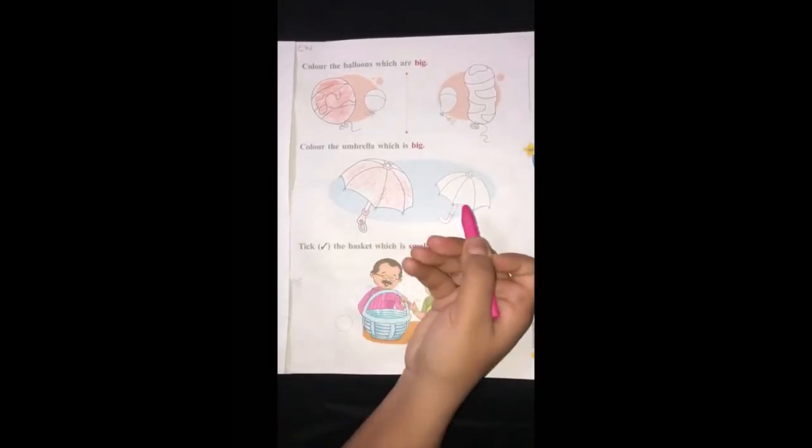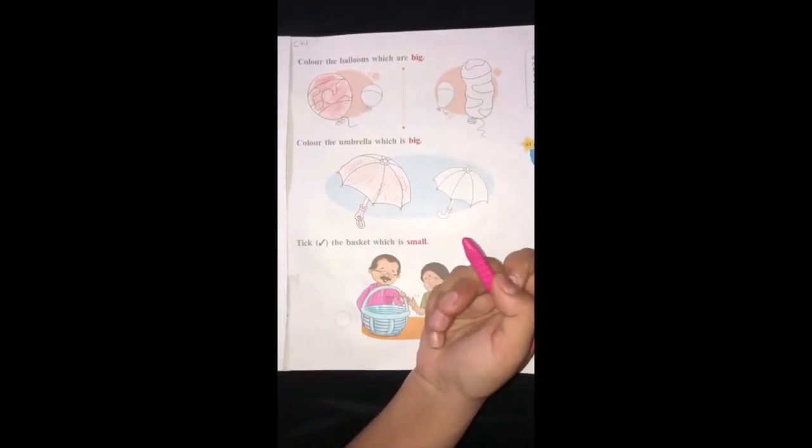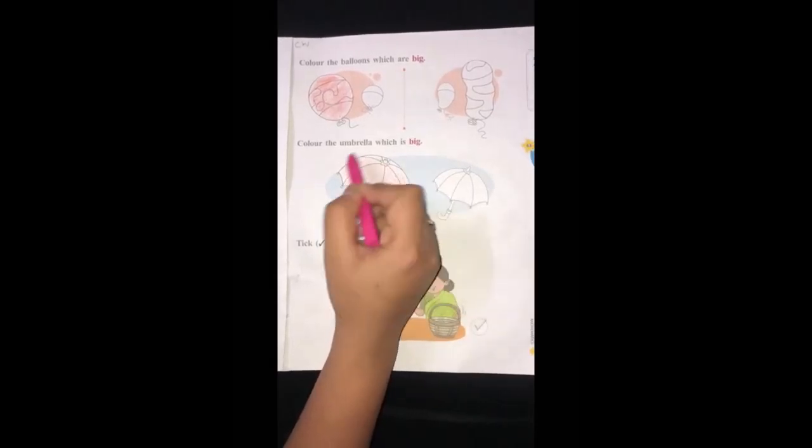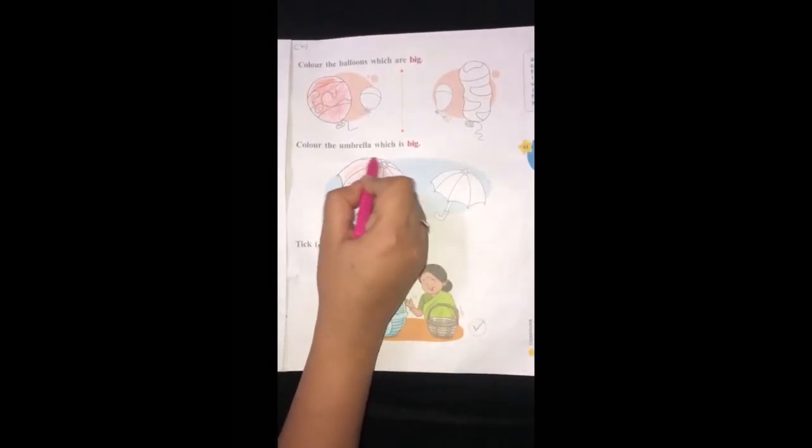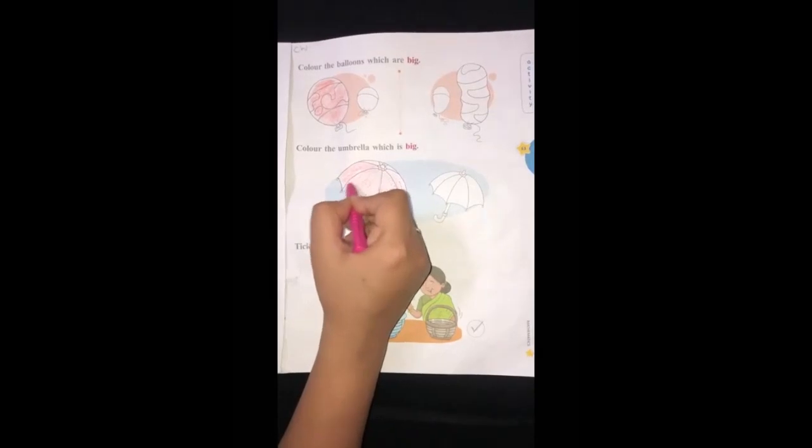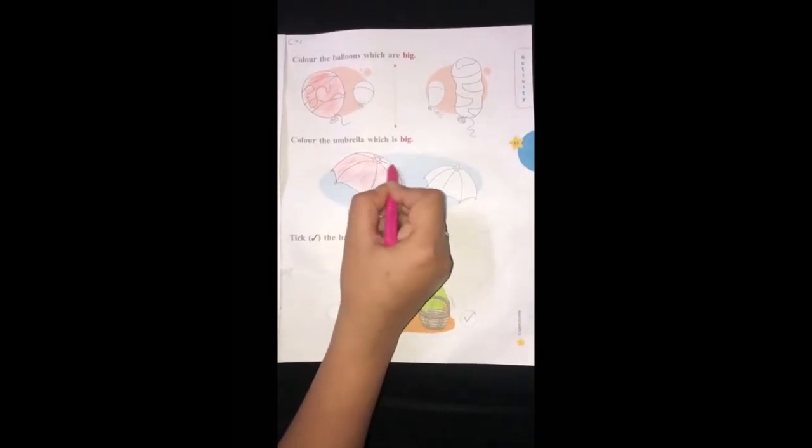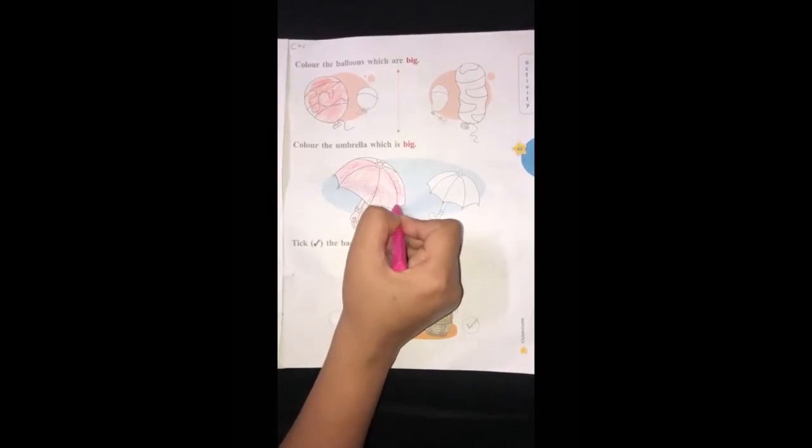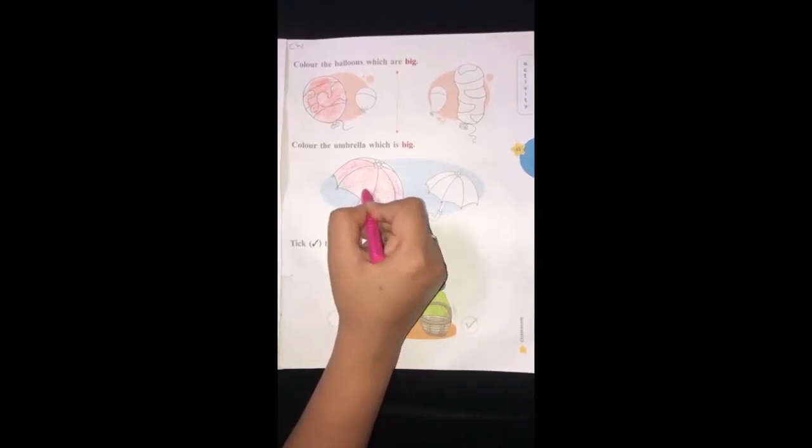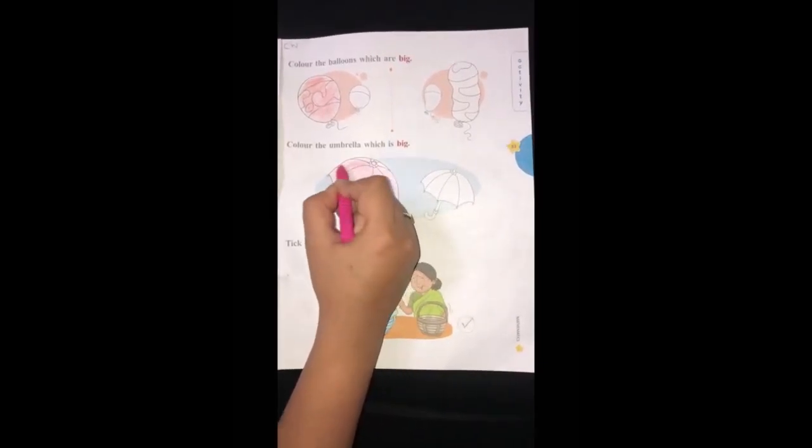So you have to find which umbrella is big in size. Yes, this umbrella is big in size. Let's color the big umbrella. Very good. Slowly and gradually, you will color the big umbrella.